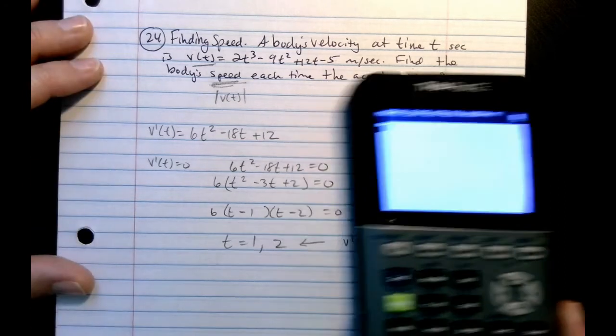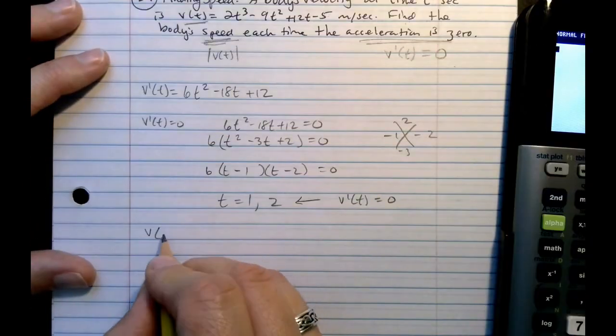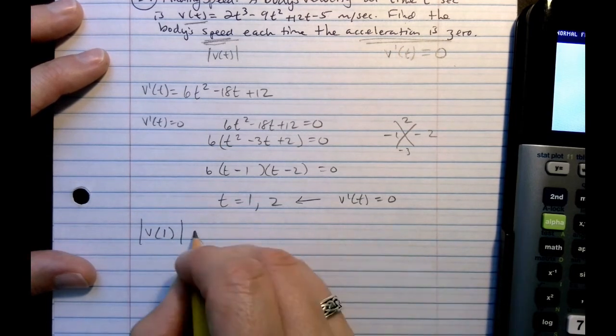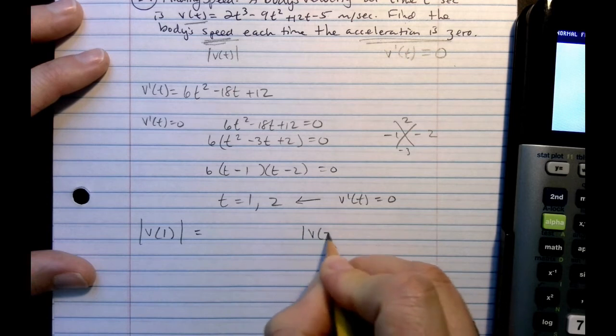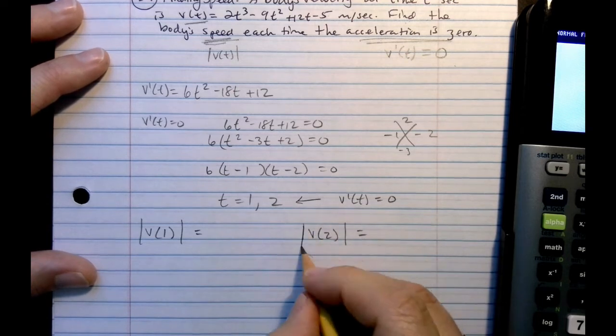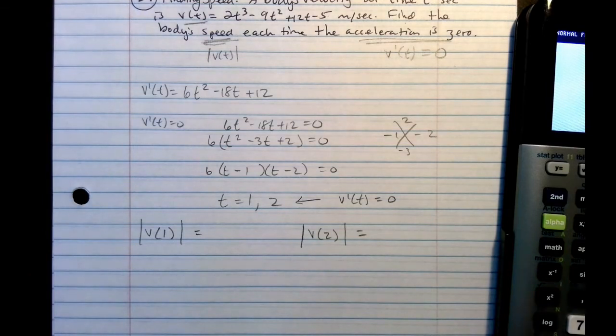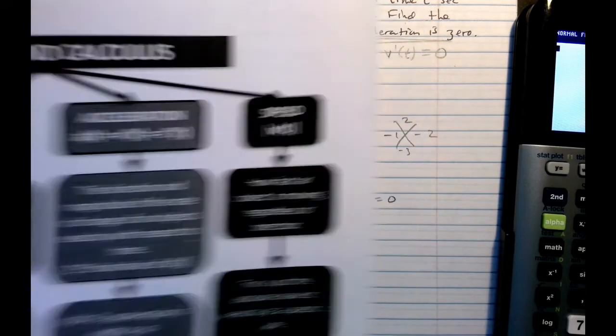Let's evaluate our velocity at 1, but we're going to do absolute value. And let's figure out the absolute value of velocity at 2. Now, again, why are we doing absolute value? Because we were asked for the speed. So what that means is it's the absolute value of your velocity.